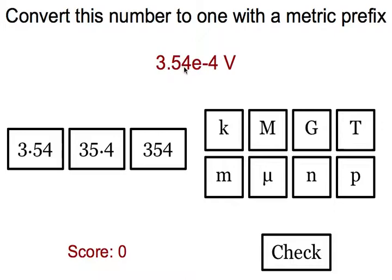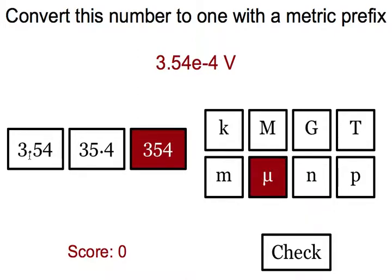In this case, 3.54 e to the negative 4th volts. The challenge is to rewrite this using standard metric prefix notation. That is some number between 1 and 1000 and the proper metric prefix.